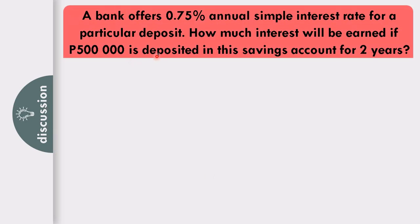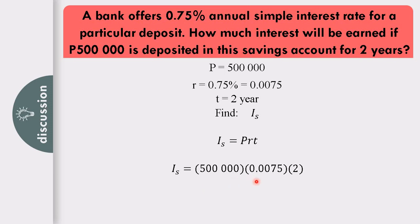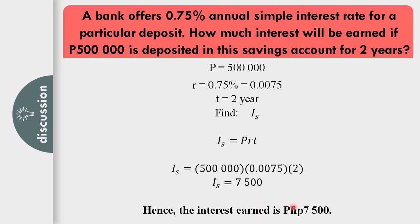For example, a bank offers 0.75% annual simple interest rate for a particular deposit. How much interest will be earned if P500,000 is deposited in a savings account for 2 years? The principal is P500,000, the rate is 0.75% converted to 0.0075, and the time is 2 years. Using I sub S equals PRT, we get I sub S equals 500,000 times 0.0075 times 2, giving an interest of P7,500.